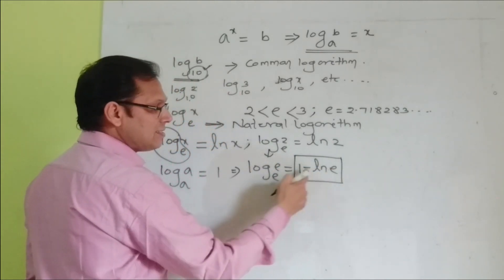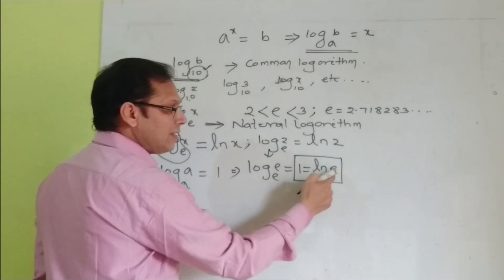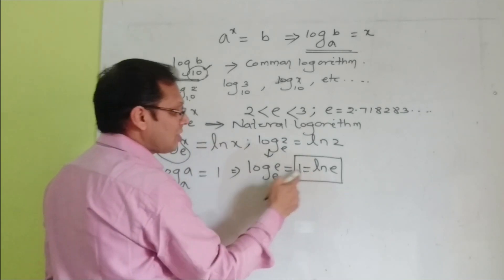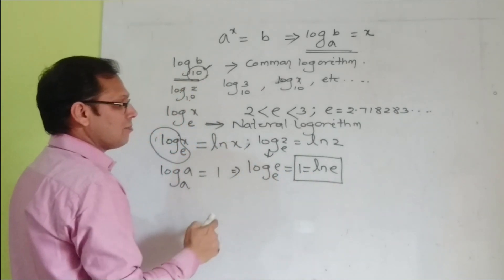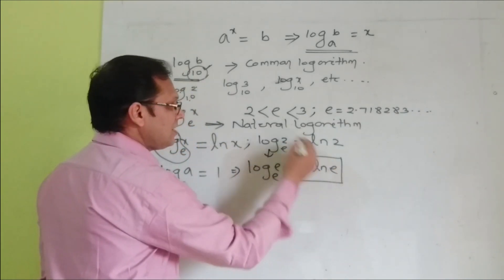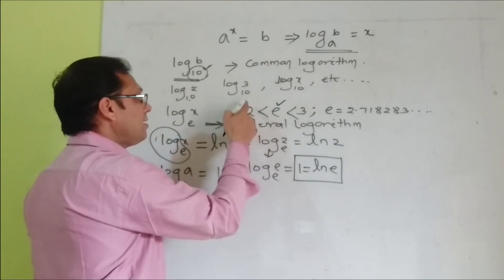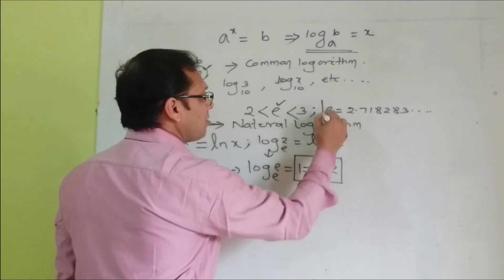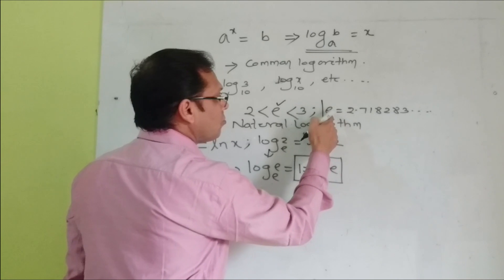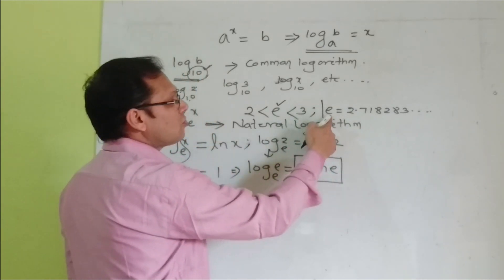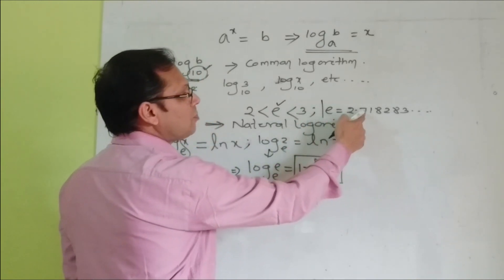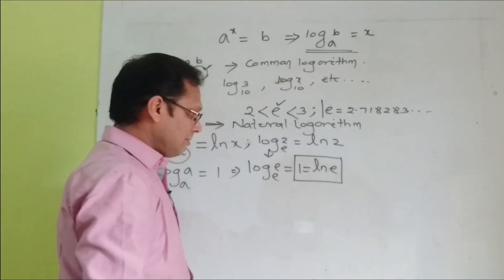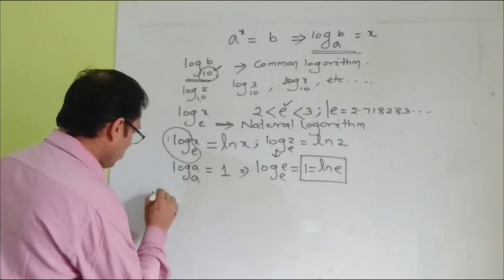Keep in memory: ln e is equal to 1. ln e means log e to the base e, which is natural logarithm. The value of e lies between 2 and 3, and in a calculator, e equals 2.718283 and so on. Now we take the eighth rule.